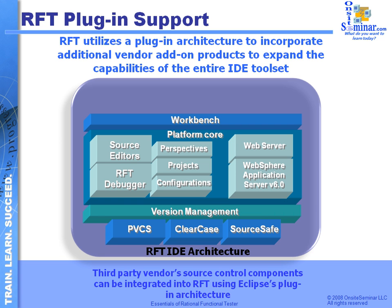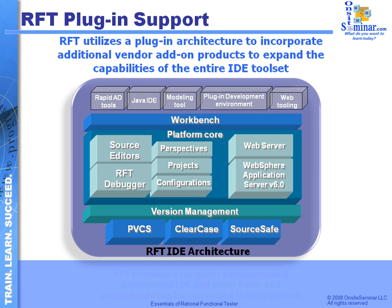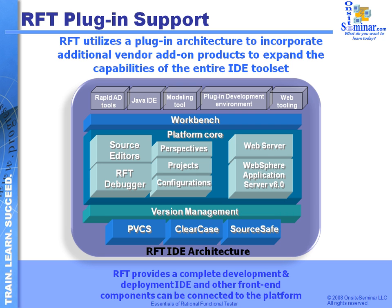One of the other things we talked about was the ability to integrate with other kinds of lifecycle projects. Since RFT is based off of Eclipse, we have the ability to tie into other kinds of tools — UML modeling tools, requirement specification types of products, Java development tools. All of these have different types of plugins that will let us communicate and exchange information back and forth. Working in Rational Functional Tester, built off of the Eclipse framework, we have a variety of different kinds of plugins that allow us to manage our code and also to incorporate other lifecycle projects and products.